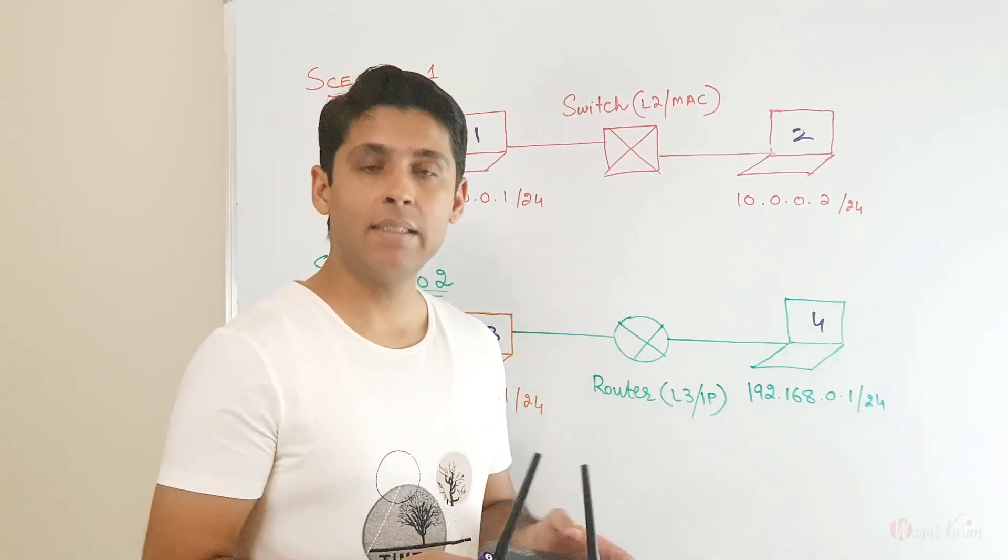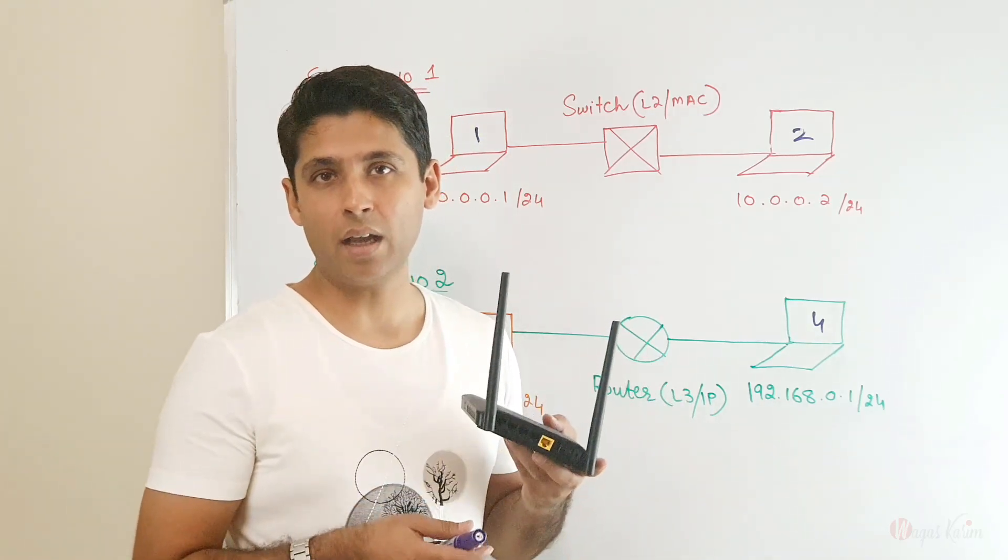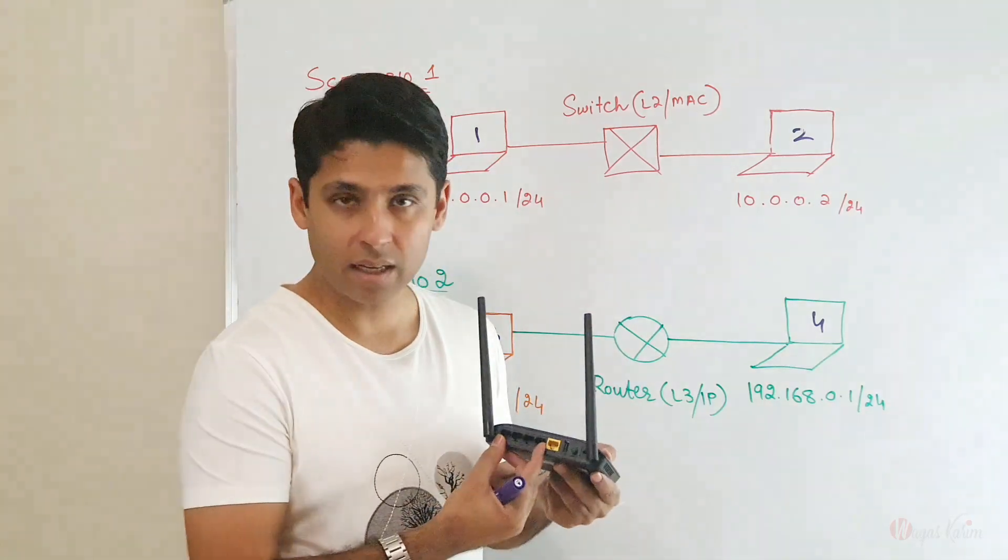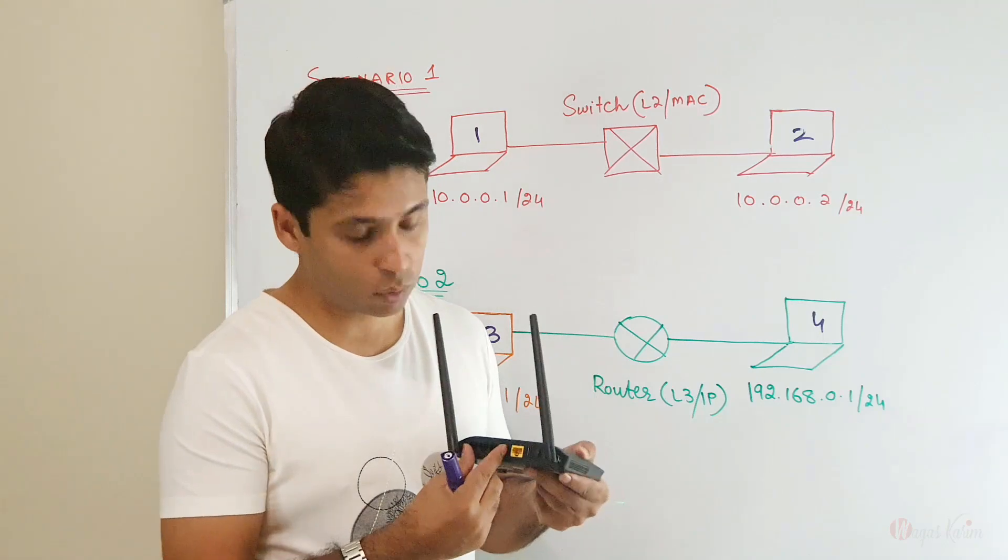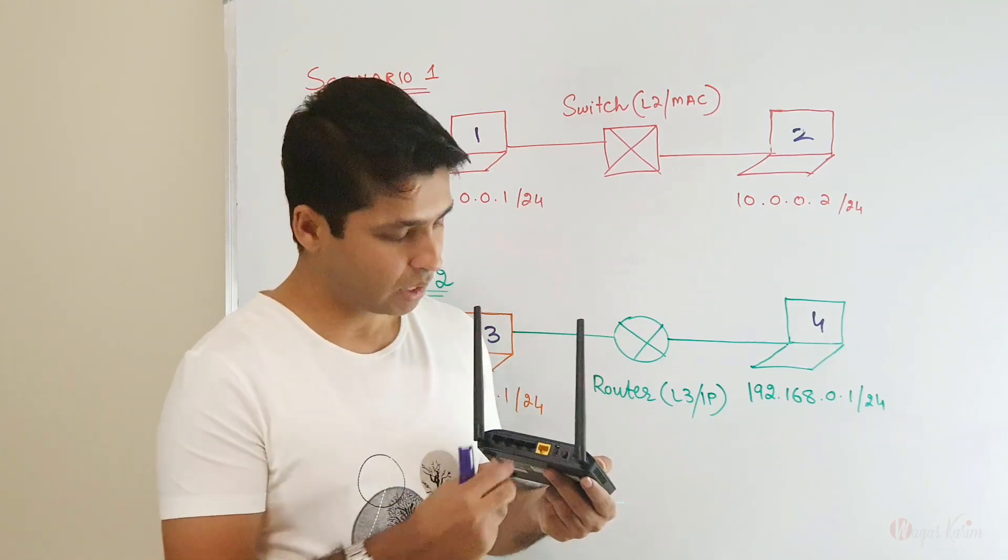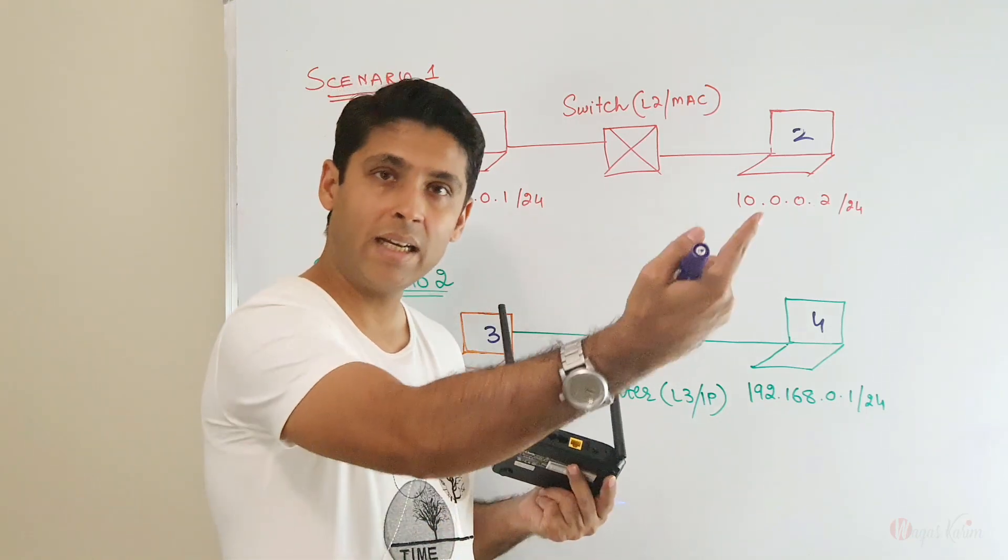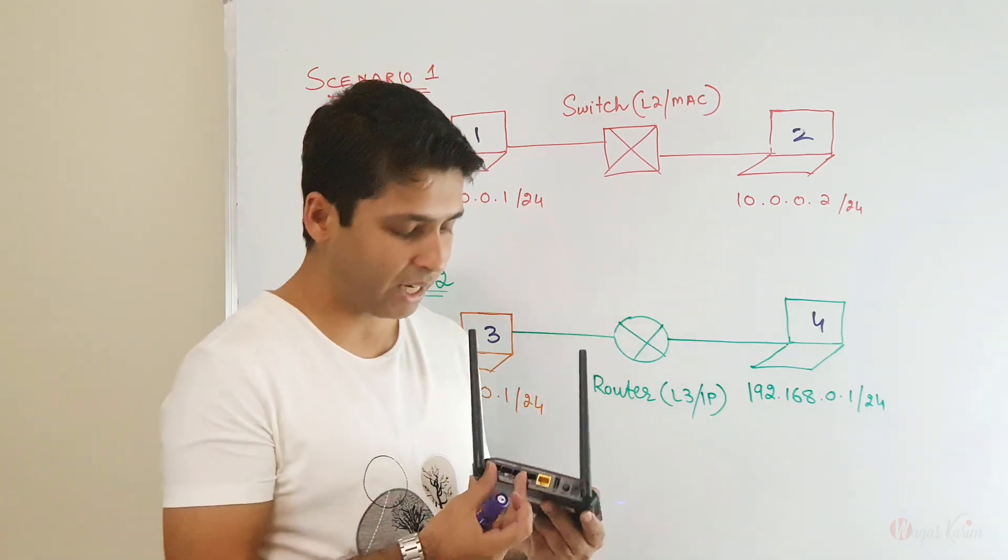This is a hybrid device. This is a combination of a switch and a router, means it has a routing port and it has a switching module as well. So this is a small switch with four ports, plus there is a routing module which connects these two different networks.